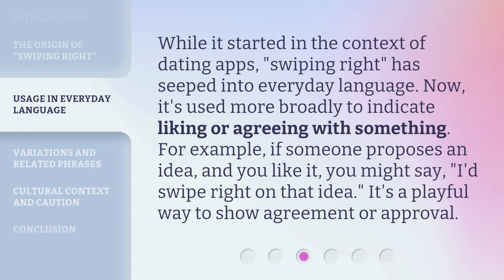While it started in the context of dating apps, 'Swiping Right' has seeped into everyday language. Now it's used more broadly to indicate liking or agreeing with something. For example, if someone proposes an idea and you like it, you might say, 'I'd swipe right on that idea.' It's a playful way to show agreement or approval.